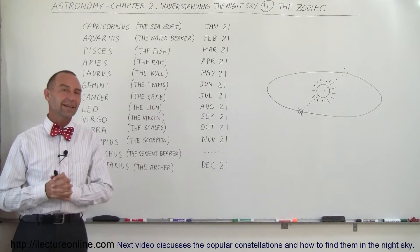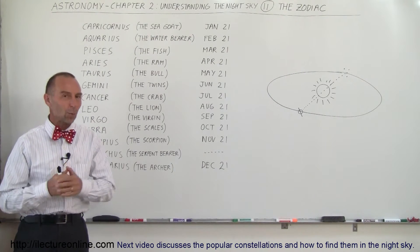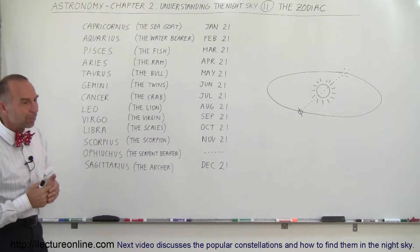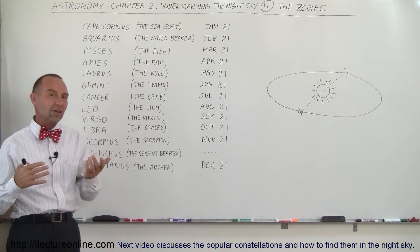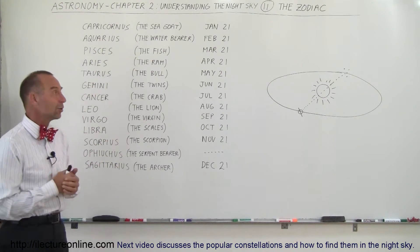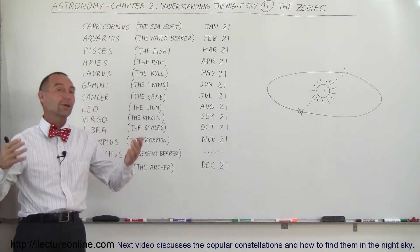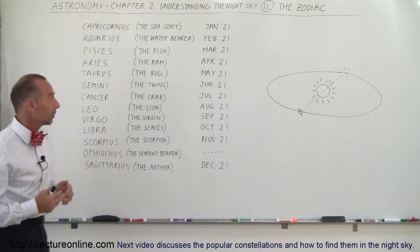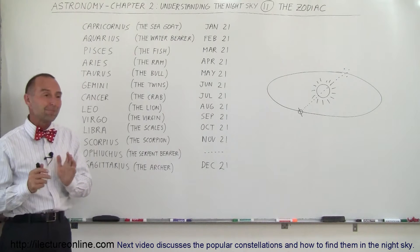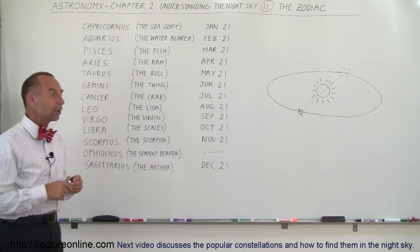Welcome to Electron Online and now let's talk about the Zodiac. What is the Zodiac? A lot of people know about astrology and most people know what their sign is. They know that they're either a Taurus or a Gemini or a Cancer or something like that. But what does it mean and why do we use that?